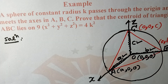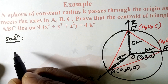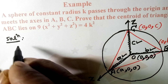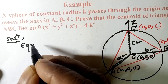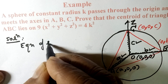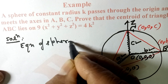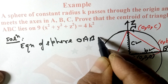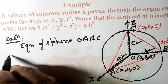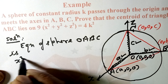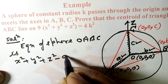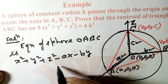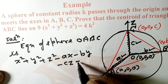The equation of this sphere through O, A, B, C is discussed in the previous lecture number 1. The equation of sphere O, A, B, C has been found there: x² + y² + z² − ax − by − cz = 0.